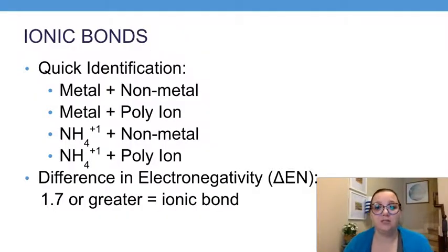If we wanted to make a quick identification of an ionic bond from the formula, we could either find a metal and a non-metal together. For example, sodium chloride - sodium being a metal and chlorine a non-metal. But you could also have polyatomic ions like nitrate, chlorate, sulfate. So you could see a metal plus one of those negatively charged polyatomic ions, or ammonium (NH4 with a positive charge) with a non-metal or polyatomic ion.